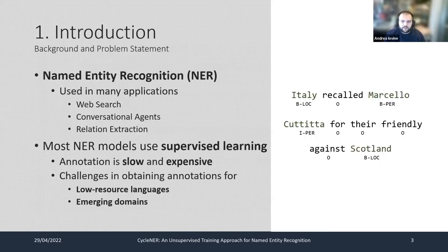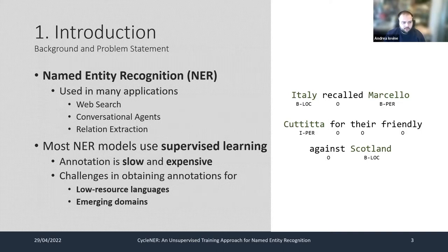Named entity recognition is a fundamental task for natural language processing, and it's used in many applications such as web search and conversational agents. Most NER models currently rely on supervised learning, which means that they are trained on a large annotated corpus. Acquiring annotations is a slow and expensive process, especially when dealing with low-resource languages and emerging domains, such as the medical one.